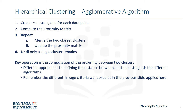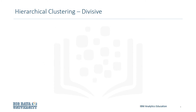Different approaches to defining the distance between clusters distinguish the different algorithms. Remember that the different linkage criteria we looked at in the previous slide applies here. Now, for the top-down version of hierarchical clustering, which is known as divisive clustering, note that this method is less popular than the agglomerative version.